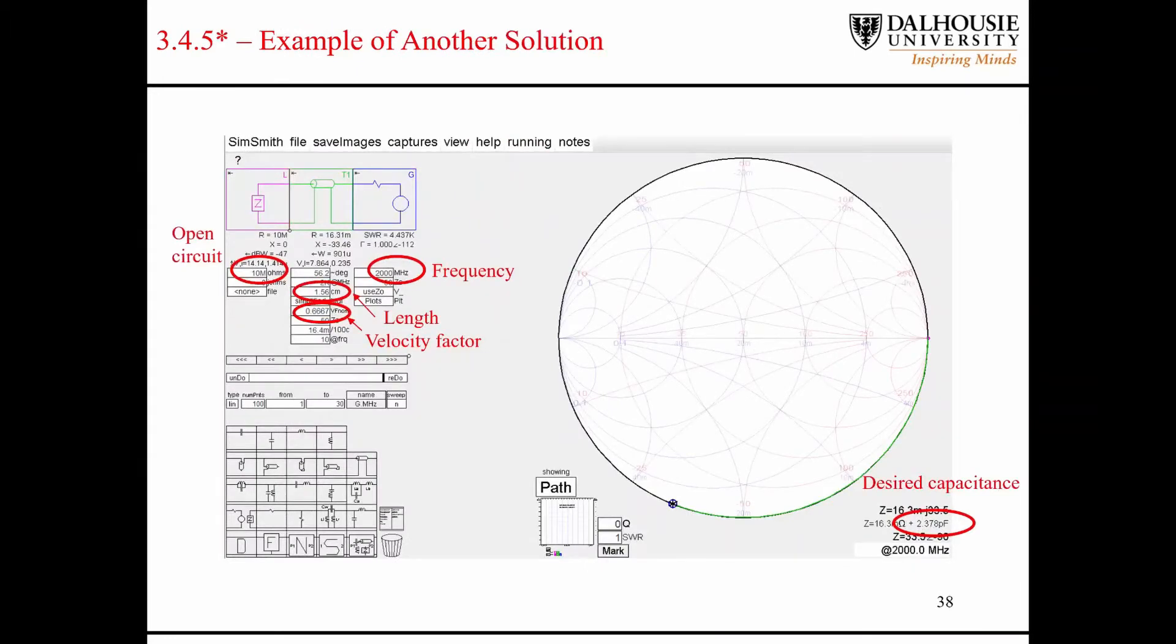I took the same approach that I took last time. I made a load that's open-circuited, this time I made it 10 megaohms. I set my frequency to 2 gigahertz. I selected a point on the Smith chart that I wanted to rotate to, which corresponds to the capacitance that we're looking for. I assumed a velocity factor of 0.67, which is pretty common. The example problem didn't define the velocity factor, so I picked that myself. Then I adjusted the length of the transmission line until my open circuit point rotated to this point here. I had a length of 1.56 centimeters.